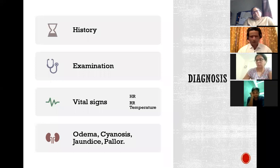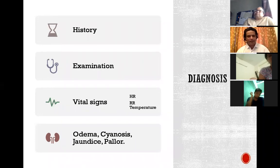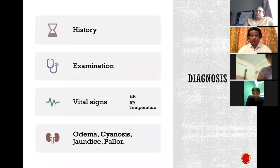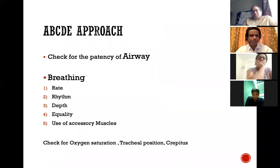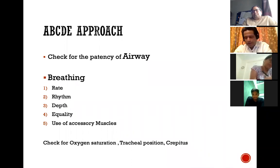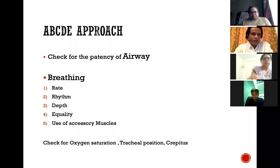How do you diagnose shock? It's what we do in day-to-day practice. Take a thorough history, examine the patient, look at vital signs, and look for signs indicating a cause of shock: pallor suggesting bleeding, oedema suggesting cardiac failure, cyanosis suggesting inadequate oxygenation, or jaundice suggesting hepatorenal syndrome. In the UK exams, it's always good to have a systematic approach — we follow the ABCDE approach.